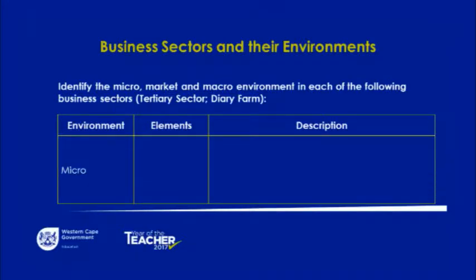Now we are stepping into the tertiary sector — the final sector. We moved from the primary, then the secondary, and now the tertiary sector. You will note that the elements remain the same even though the sectors are changing. We are now looking at the micro environment of the tertiary sector. The elements of the micro environment are the vision, the mission, the goals, objectives, and the workforce.